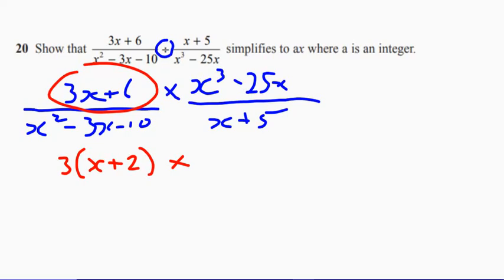Now, what we've got there is we could write, well, x is a common factor, so we can write x and then we're going to have x squared minus 25. I'll tell you about that in just a second. You might have spotted something there already.